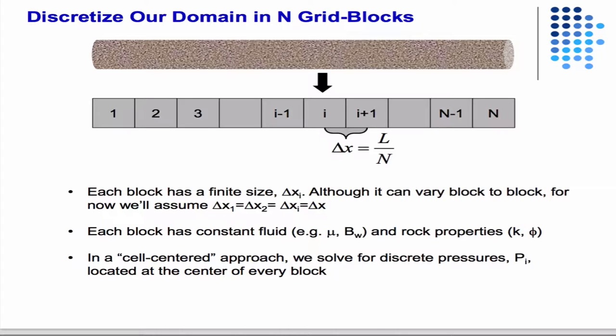We're going to break our continuous core. We're all working in one dimension right now, so we're going to break it up into a line of blocks. We're going to number those blocks from one to N. In this case, if you have a constant delta x, it's the total length divided by N.